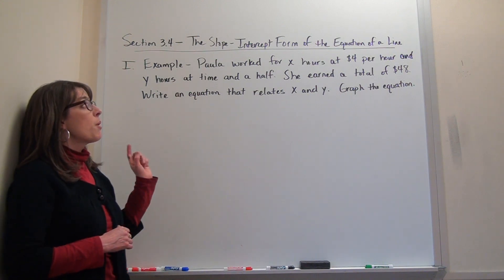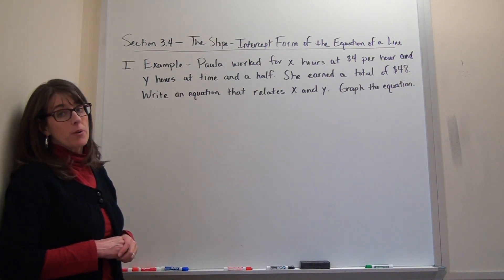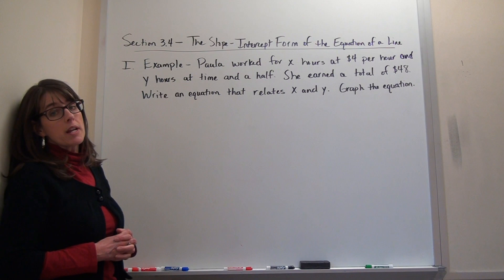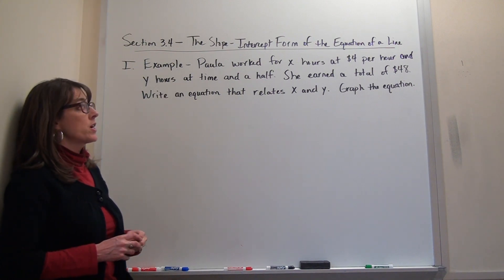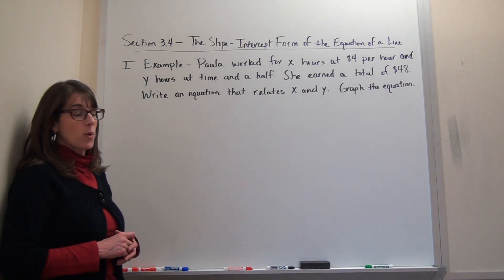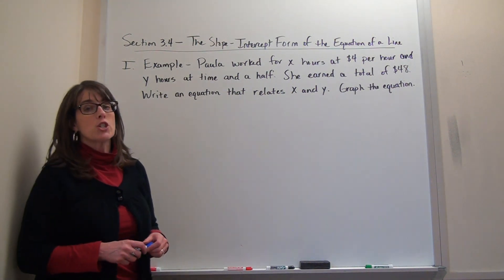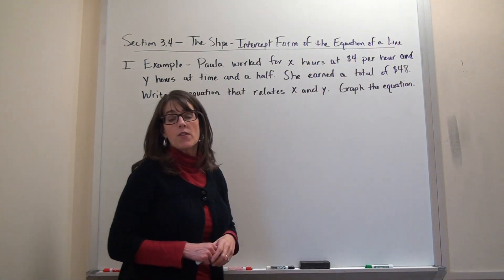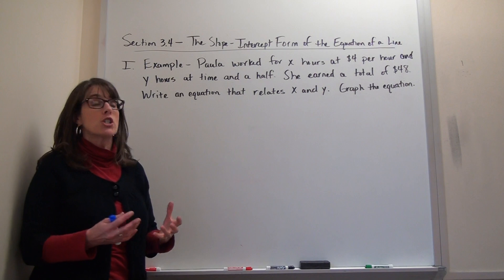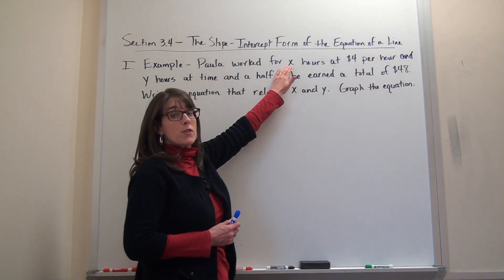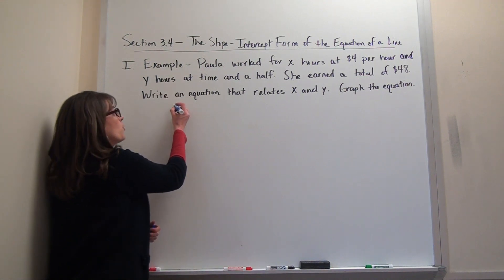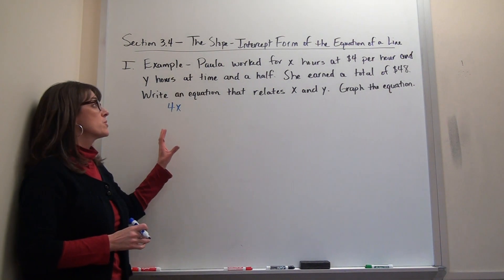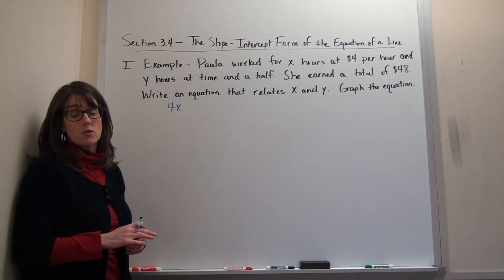In the situational example, Paula works for x hours at $4 per hour, and then she works for y number of hours at time and a half. She earns a total of $48 in the day, and we want to write an equation that relates the x and the y, and then we're going to graph that equation.